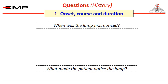Write down: the lump was first noticed, for example, six months ago. Don't say it's a lump of six months duration, because sometimes the duration is more than this, but the patient only noticed it six months ago.